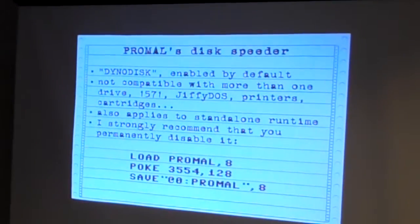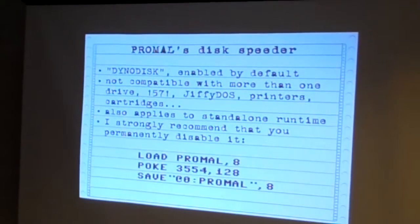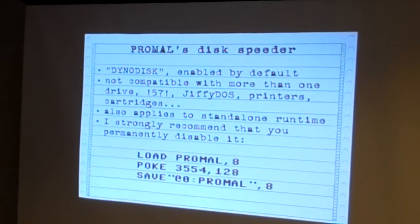If you get interested in PROMAL and want to try it on your C64, there are a couple things to be aware of. First, it probably won't even load, because it came with a built-in speed loader — a disc speeder — and it's just awful. It's incompatible with so many things. The best advice is to use that POKE to turn it off permanently and save it that way. That POKE comes directly out of the PROMAL documentation; it not only turns it off, it's completely disabled.